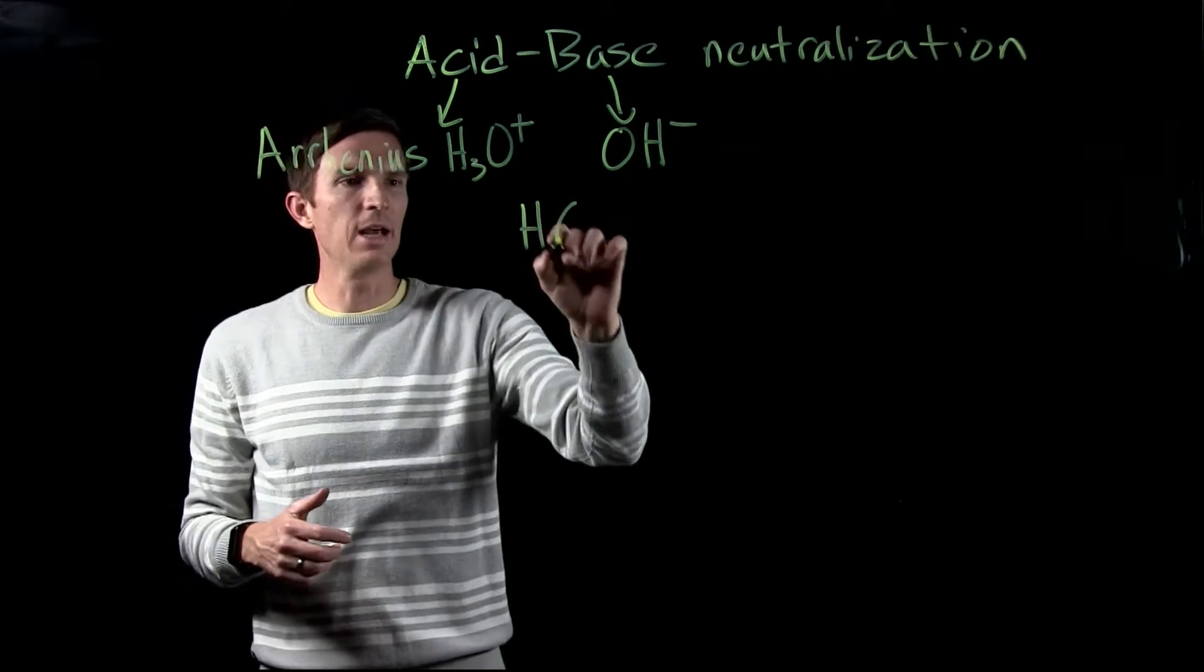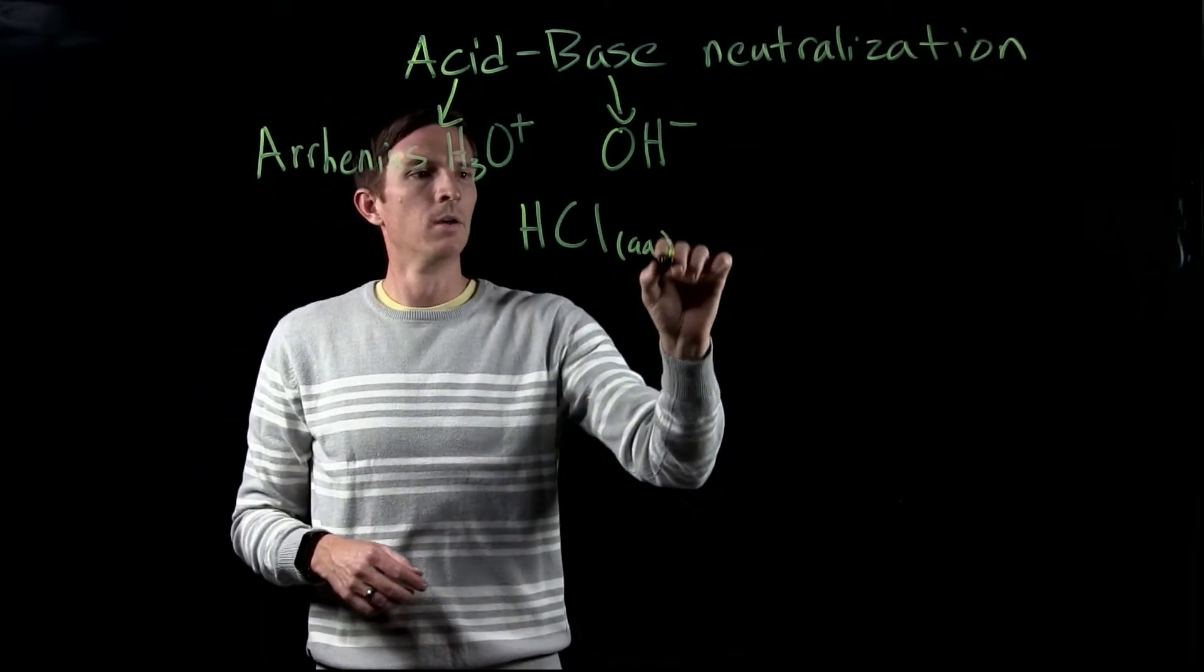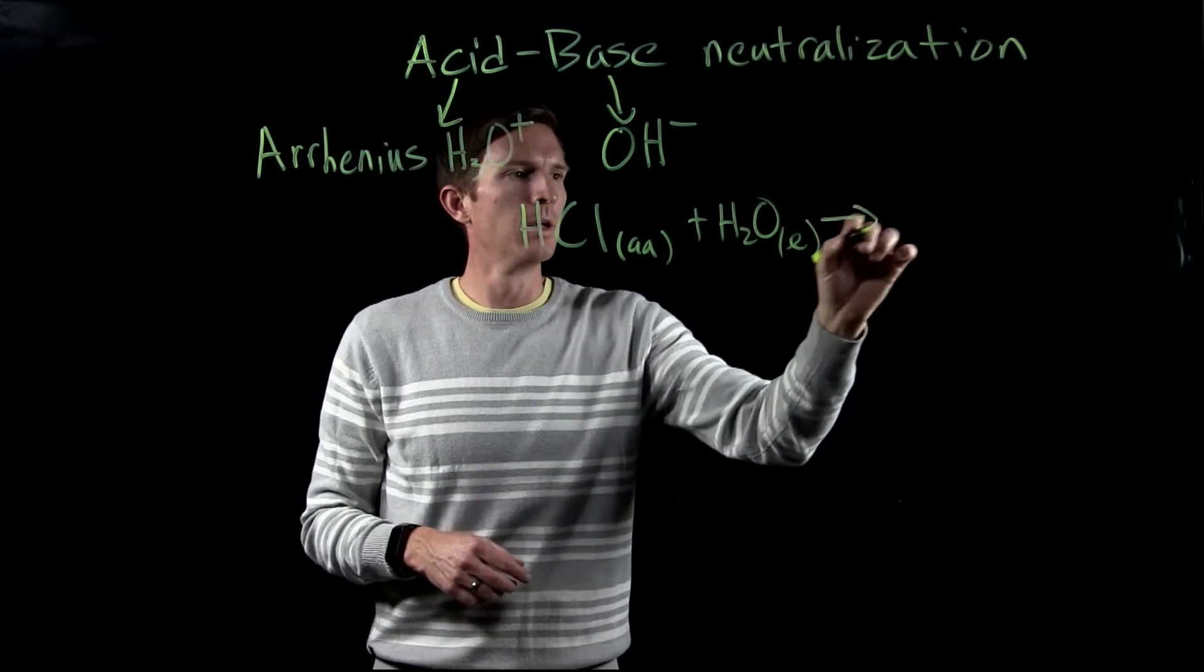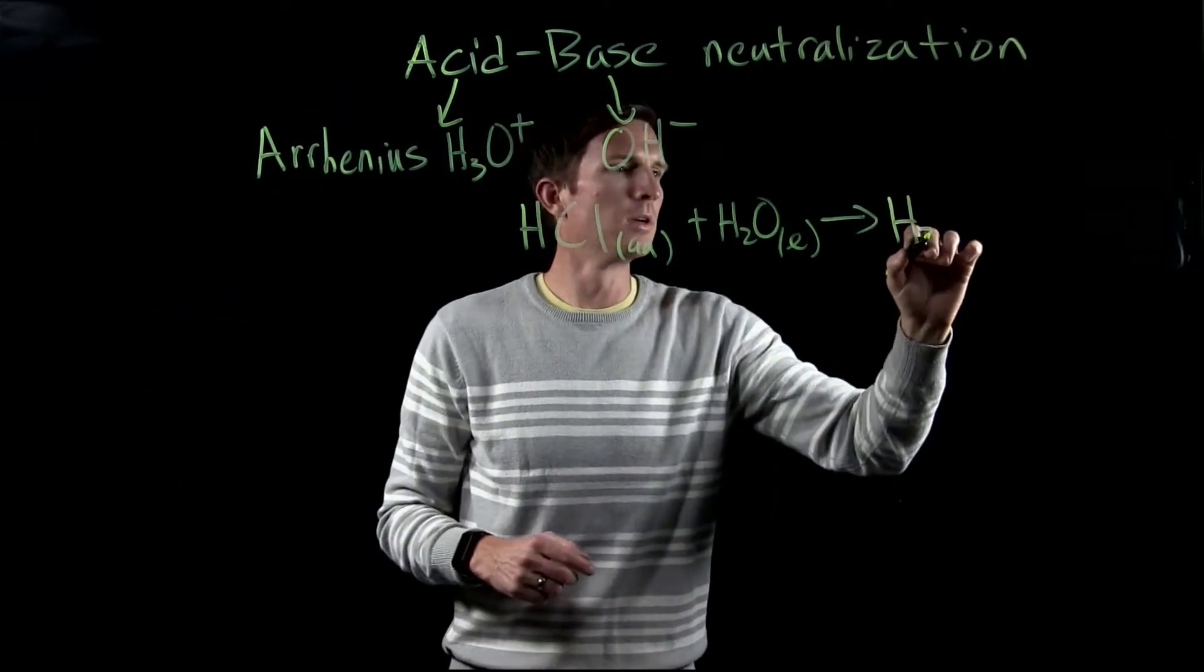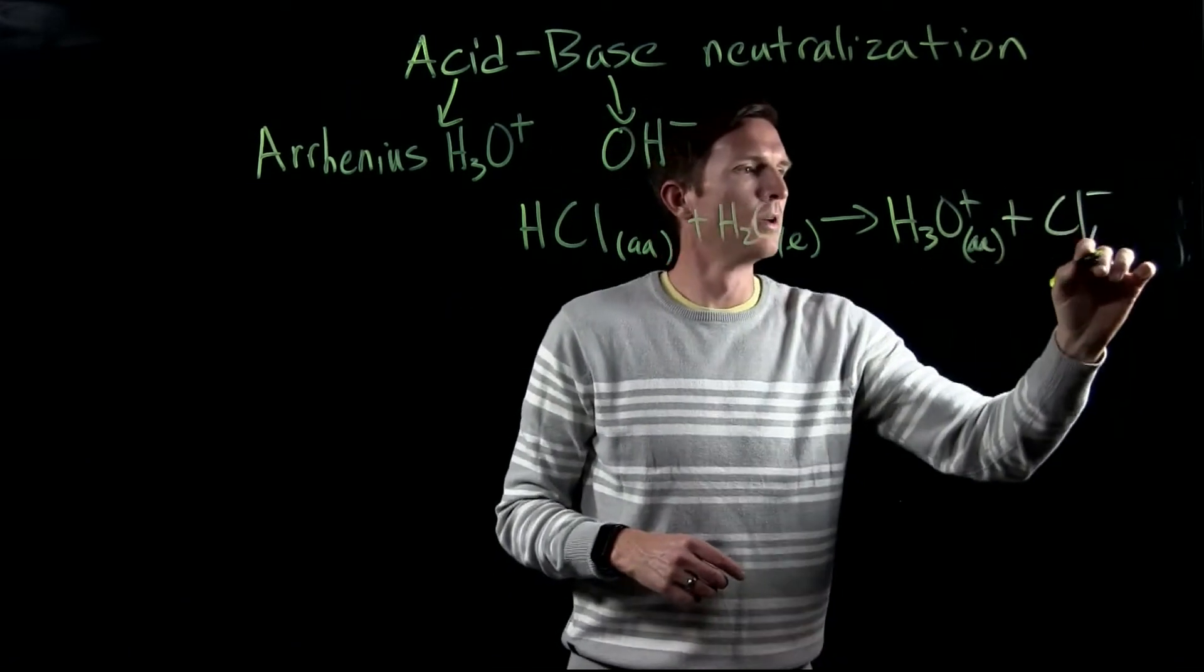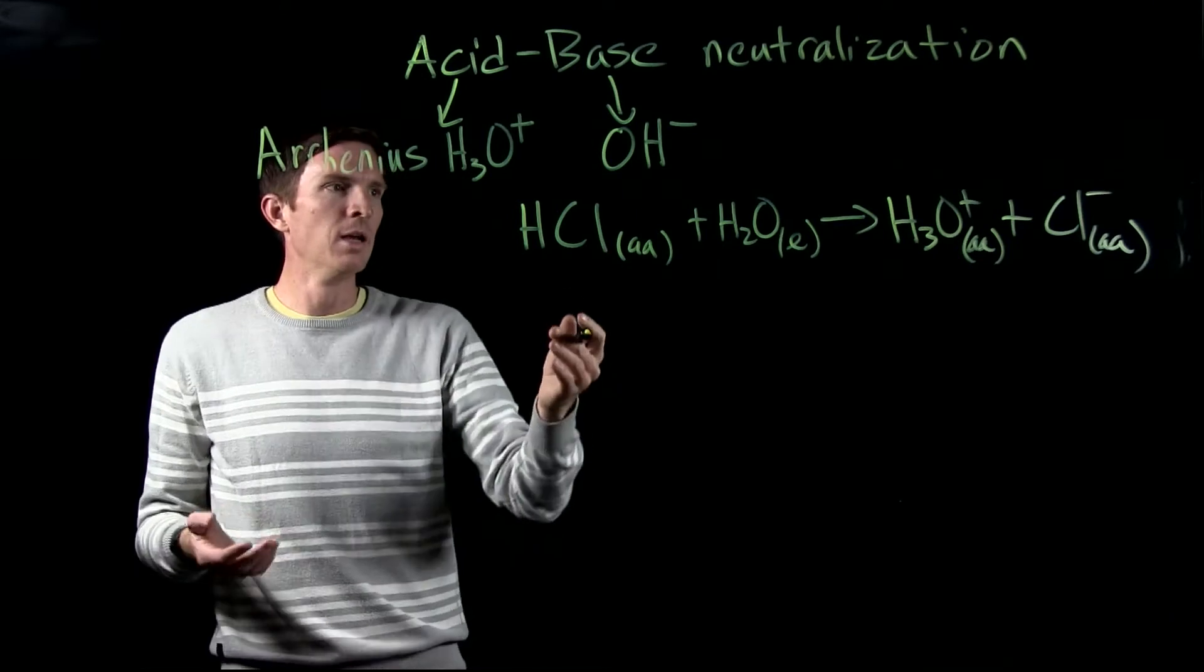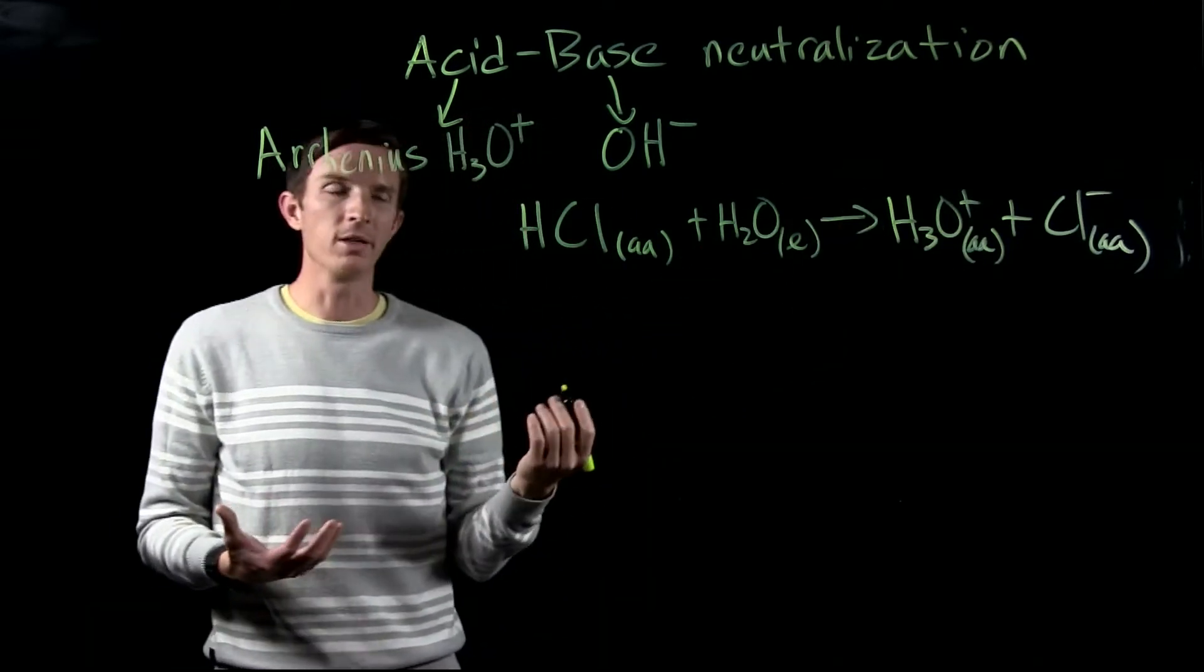So for example, let's say we have HCl. Well when HCl is in water, it's going to react with that water and undergo an ionization reaction to give us H3O plus and the chloride ion. So now we see this, we define HCl as an acid. It's forming H3O plus.